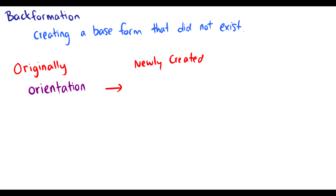Here's another one: backformation. It is very difficult, when looking at words, to figure out if a word was formed through backformation — it's nearly impossible without a dictionary and knowledge of its etymology. Backformation happens when you create a base form that did not originally exist. For instance, orientation — we see the -ion suffix and think it came from the base word orientate. So we created orientate because we had this -ion word, and people also saw the -ation suffix and deleted it to make the word orient.